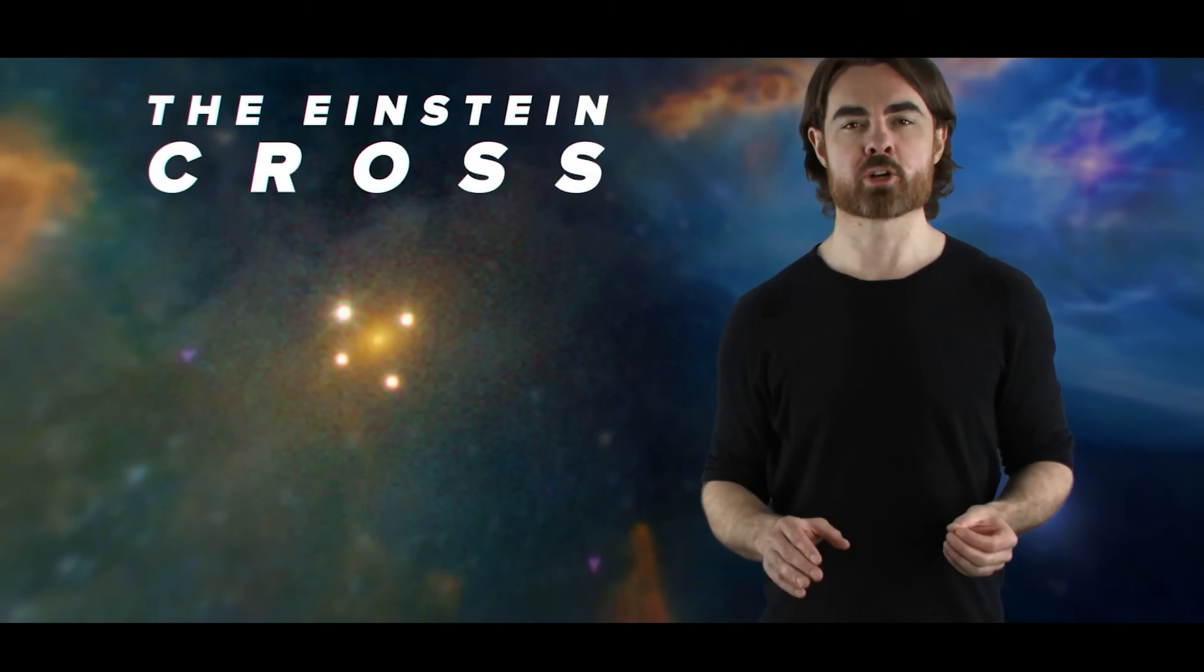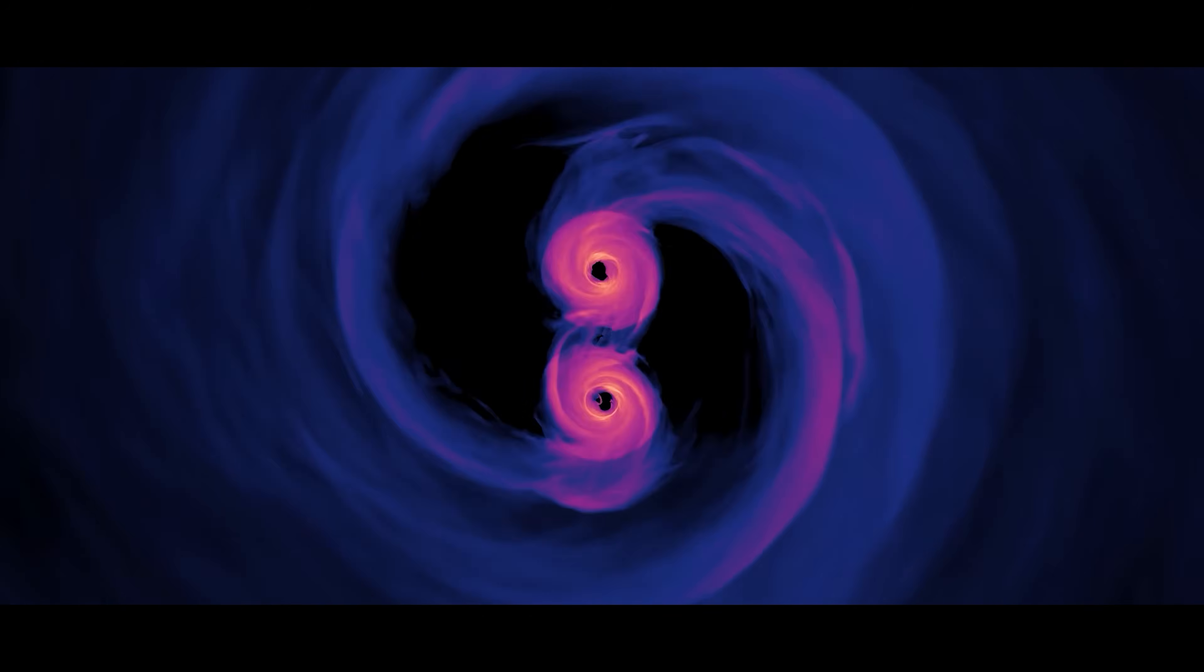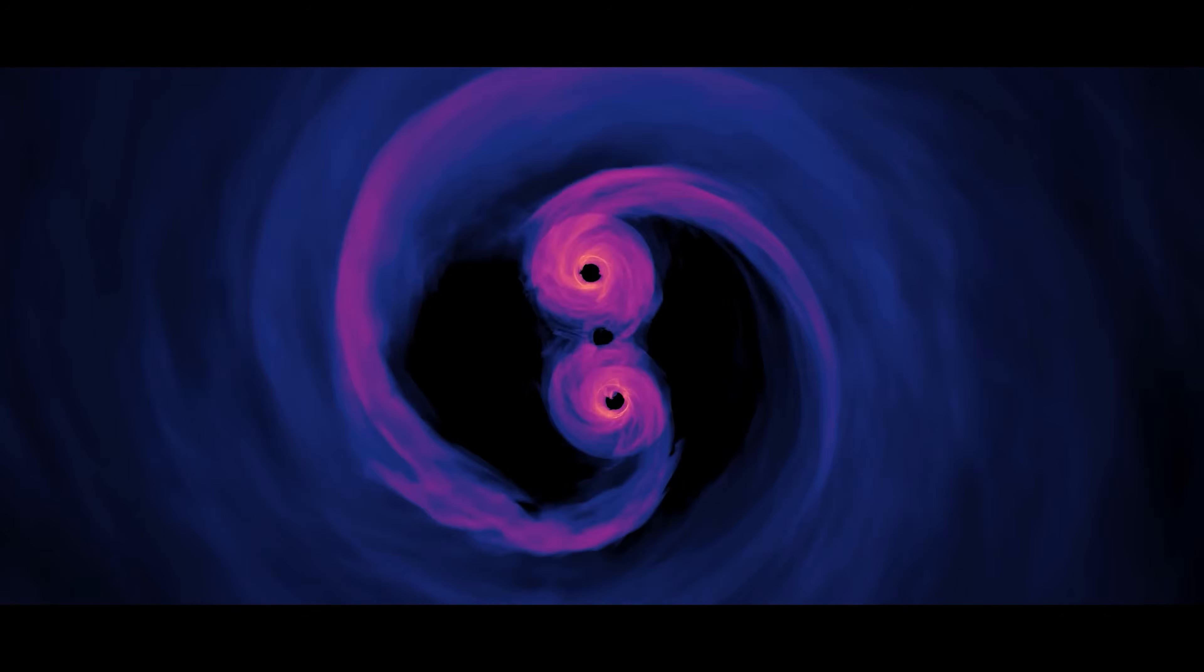Four points of light arranged symmetrically around the lensing galaxy. This is the Einstein cross, an extremely luminous distant quasar, powered by a supermassive black hole feeding on its surroundings.